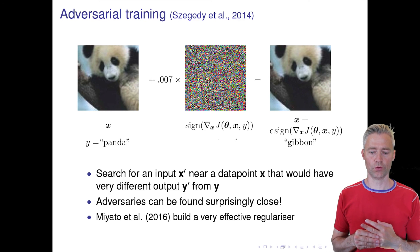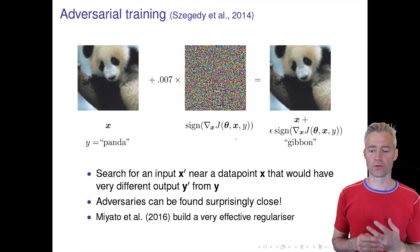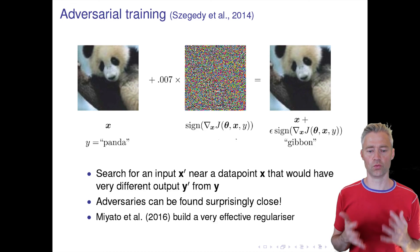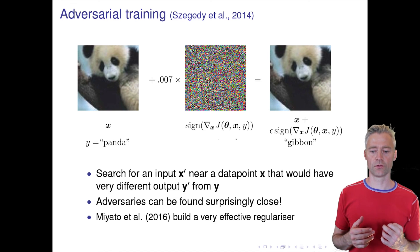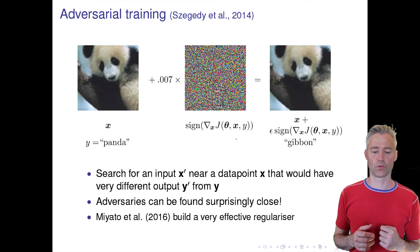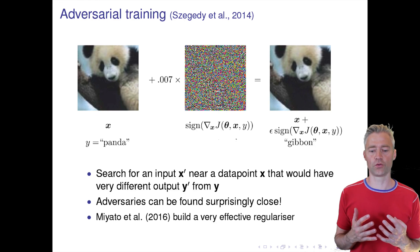This can be thought about as a way—by adding these examples we can of course hope that the network will be more robust to these things that look the same for us but don't look the same for the network.